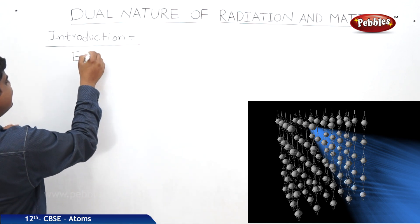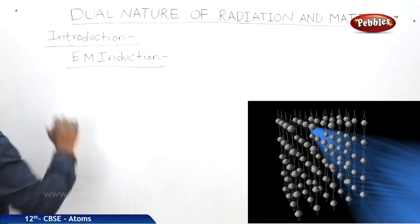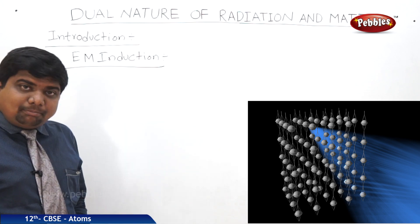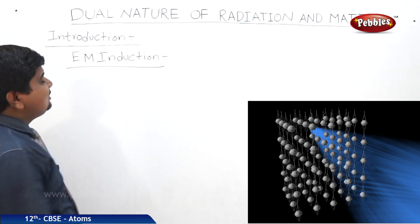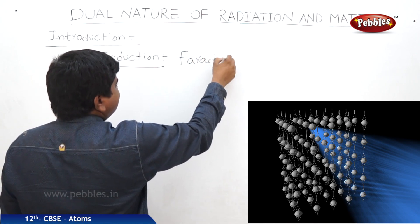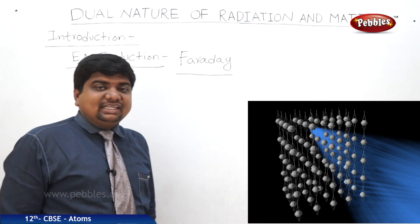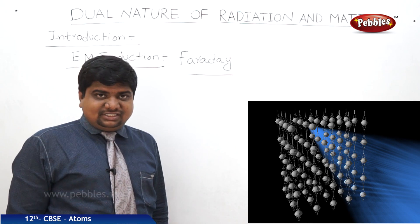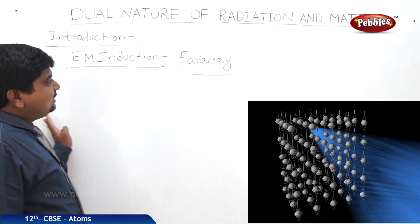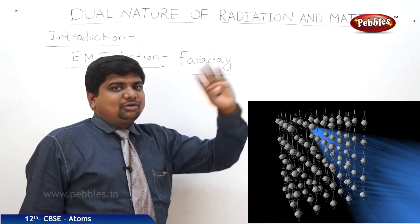Electromagnetic induction means a change in magnetic field produces the induced EMF, and change in electric field produces the magnetic field. This electromagnetic induction was discovered by Michael Faraday. After that, some other scientists came and visualized the production and propagation of electromagnetic radiations.